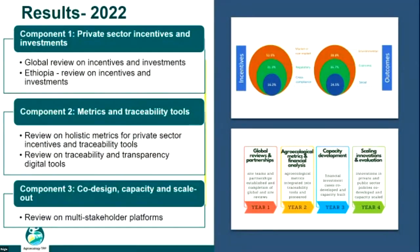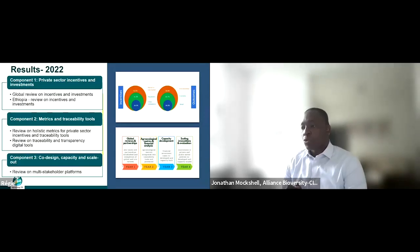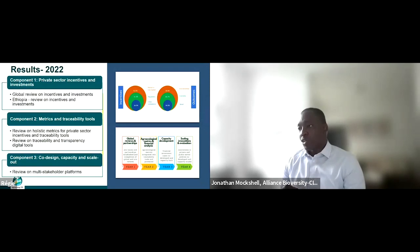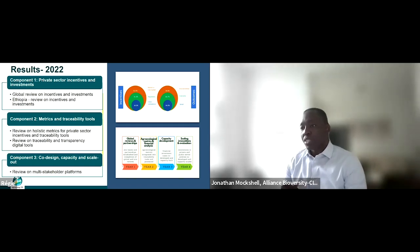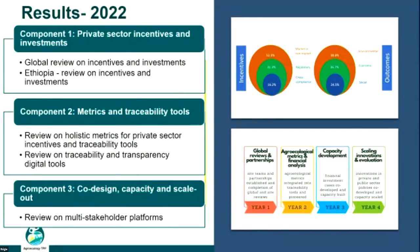For year one, 2022, we've been able to start reviews across the three different project components looking into incentives. In Ethiopia, for example, we noticed that the majority of existing incentives focus on markets and market price support, with very little focusing on cross-compliance. In terms of outcomes, the majority focus on environmental aspects, with very little on social and other important indicators necessary for agroecology's inclusion dimension. For metrics and traceability, we are conducting reviews on how to integrate metrics important for transitioning to agroecological food systems, and we are reviewing existing multi-stakeholder platforms to understand what has worked well and the learnings to improve our engagement within different countries.